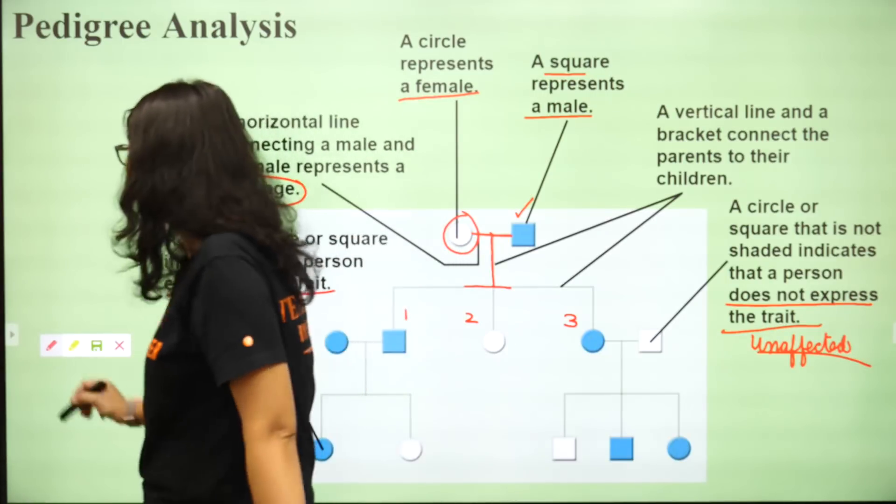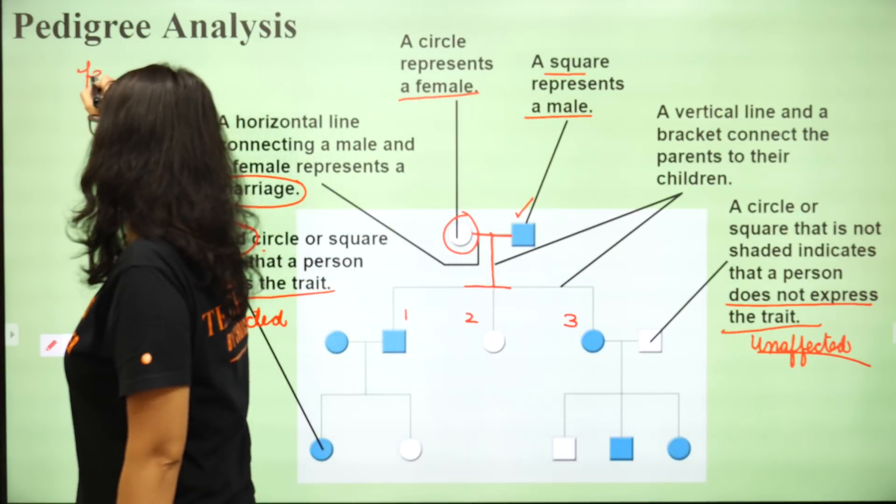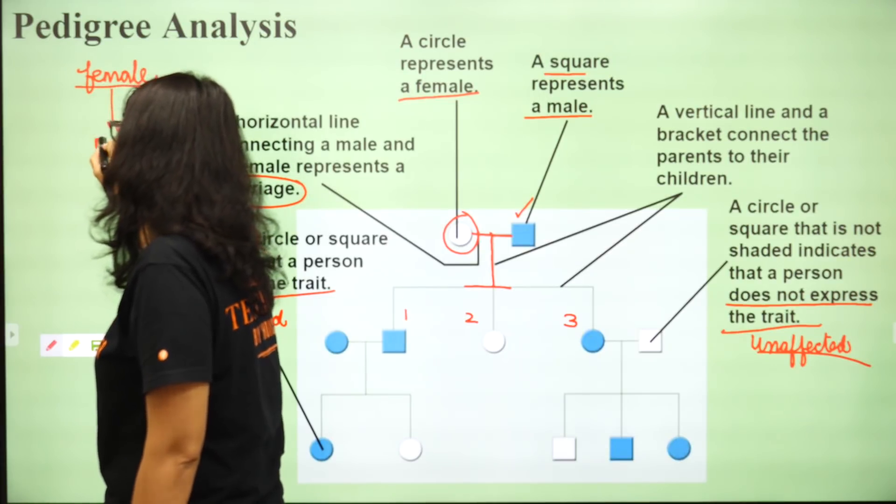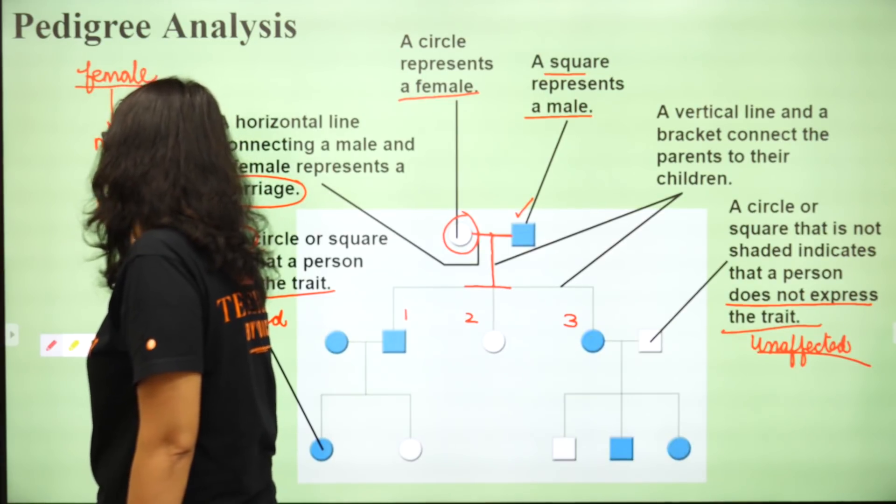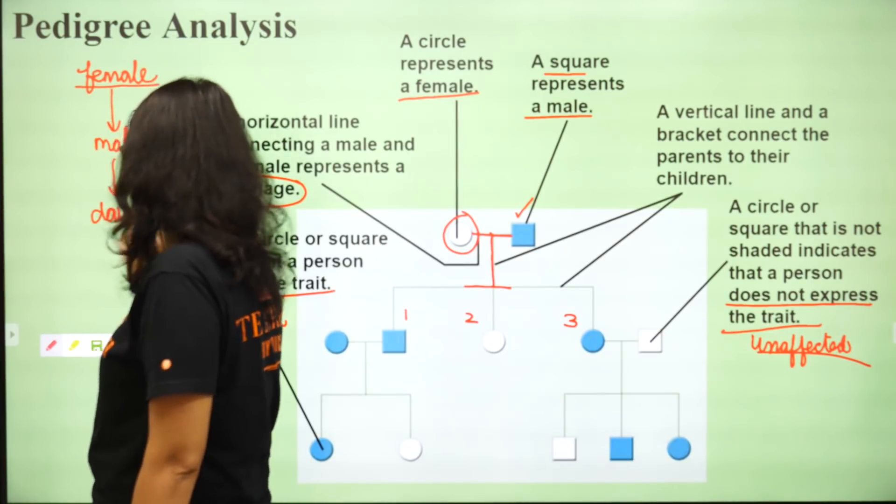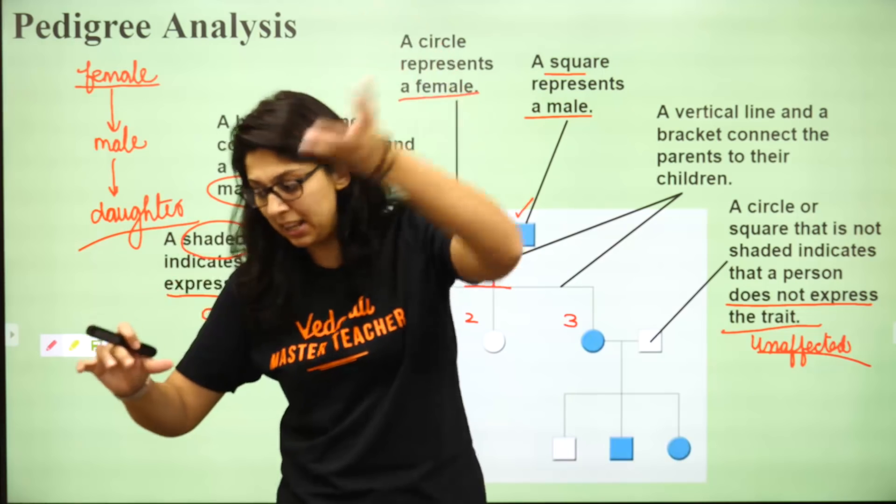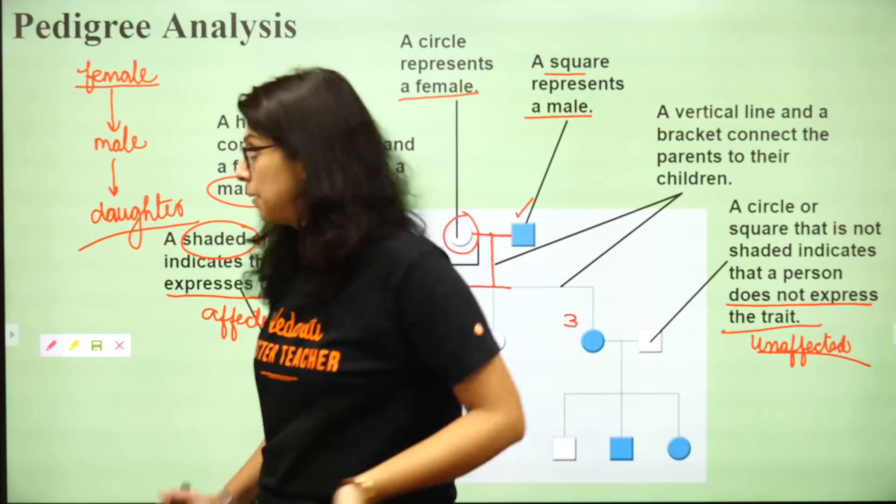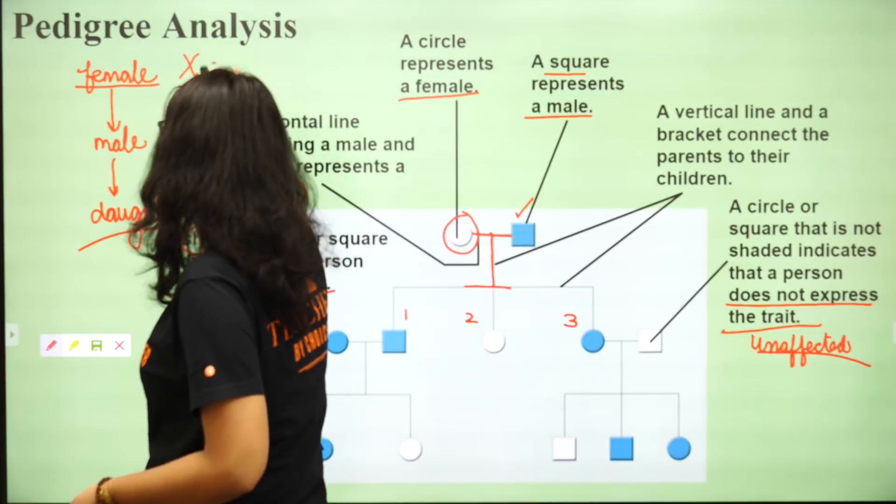Agar dhyan se suniye. Agar maan lijiye female se woh female sufferer hai ya carrier hai aur female se woh male mein ja raha hai aur male se woh uski daughter mein ja raha hai. Toh ek criss cross hai. Criss cross ka matlab is female se male, male se daughter, daughter se dobarah male. That means it's transferred by X chromosome.